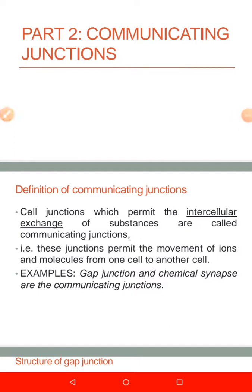The other part of cell junctions are called communicating junctions. Just from the word communicate, it's a junction that allows communication between cells. Cell junctions which permit the intercellular exchange of substances are called communicating junctions. These junctions permit the movements of ions and molecules from one cell to the other. Examples of these communicating junctions are the gap junctions and chemical synapses.